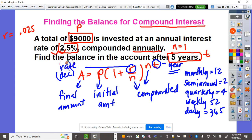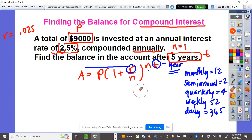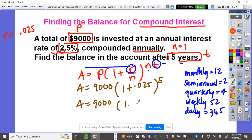A is the final amount, P is initial, N is compounded times, T is years, R is rate. A is what we're looking for. The initial amount is 9,000. 1 plus 0.025 over 1, and T is 5. So it's 9,000(1.025) to the fifth power.